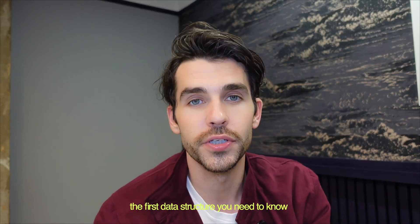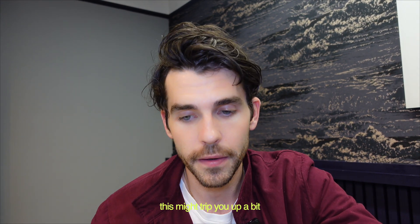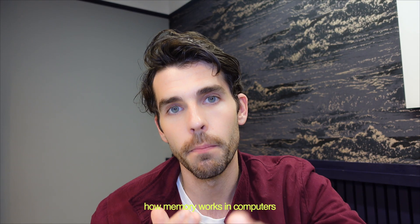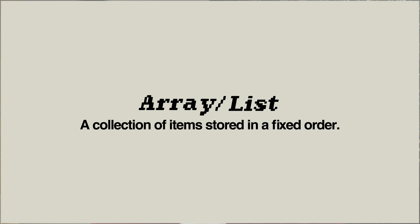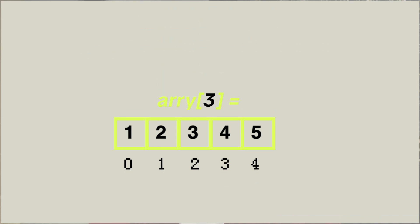The first data structure you need to know is an array — or in Python, it's called a list. This is the foundational baseline data structure. If you've done any programming course, you'll come across an array. A key concept to know straight away: we count from zero and not one in the real world. The reason we do this is because it matches how memory works in computers. Items are stored next to each other in memory and you access them via the index — like a row of boxes.